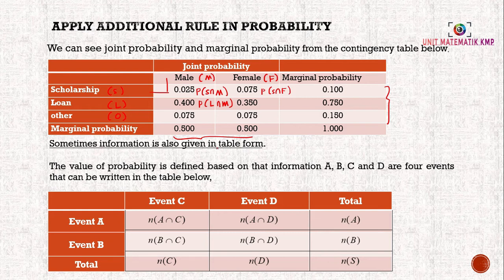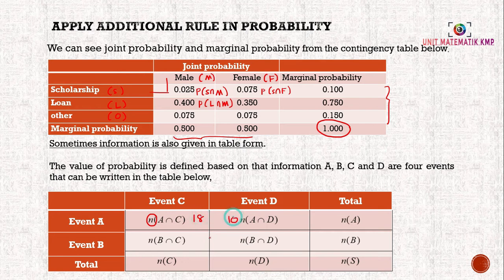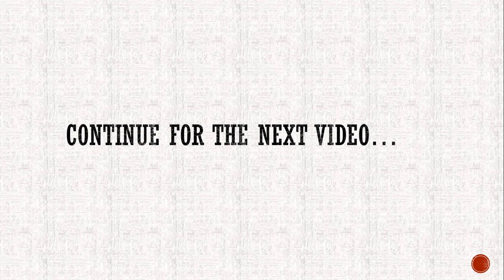Sometimes the information is given in table form as raw numbers rather than probabilities — for example, values like 18, 10, 2, 4. In that case we do not call them joint probabilities directly. The last total in the table must equal the total sample space size. That's all for this video part 1 — we will continue in the next video. Thank you for listening.